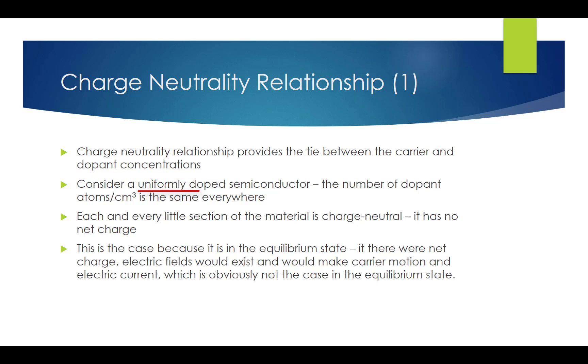In a uniformly doped semiconductor, the number of dopant atoms per cubic centimeter is the same everywhere. Let's examine every little section of this semiconductor, and we will find that every little section is charge neutral, which means it has no net charge. The charge is zero.